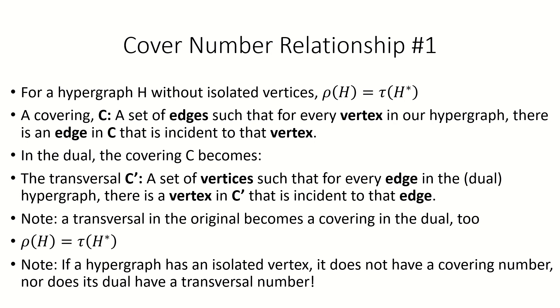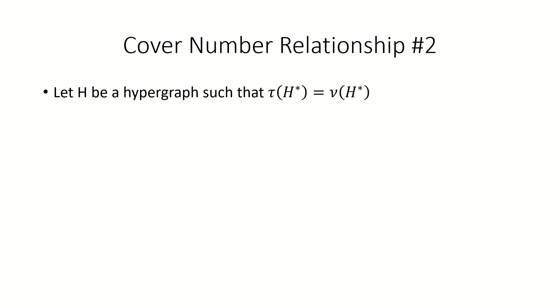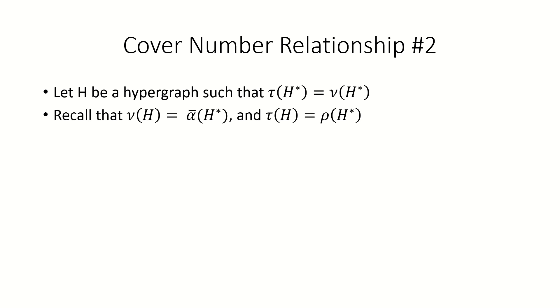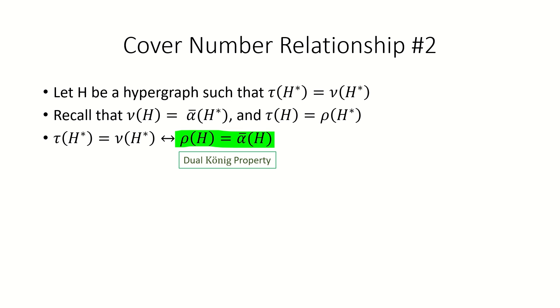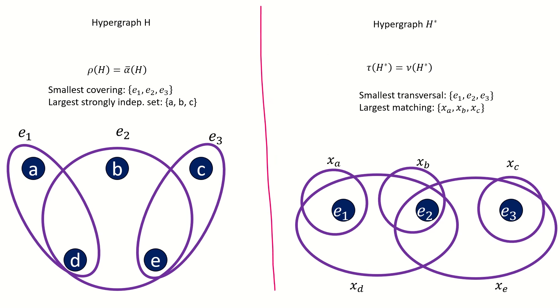Hypergraphs that have an isolated vertex do not have a cover number, nor do their duals have a transversal number. For our second relationship involving the cover number, let's consider hypergraphs whose duals satisfy the Koenig property. Recalling that the matching number of a hypergraph equals the strong independence number of its dual, and that the transversal number equals the cover number of its dual, these facts together tell us that the dual satisfies the Koenig property if and only if the original hypergraph's cover number equals its strong independence number. We call this the dual Koenig property.